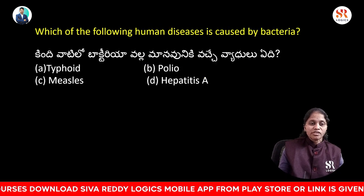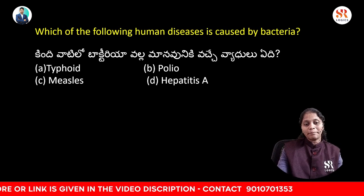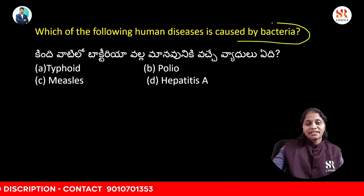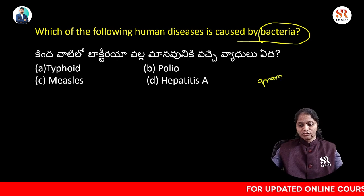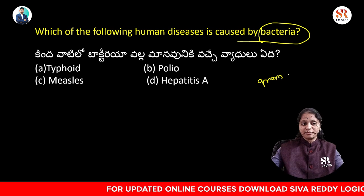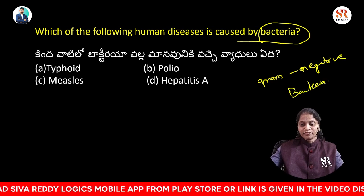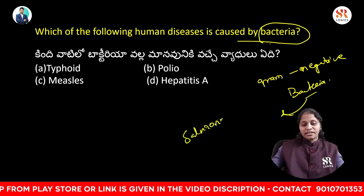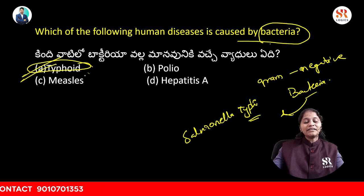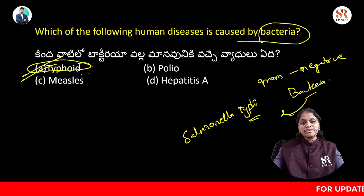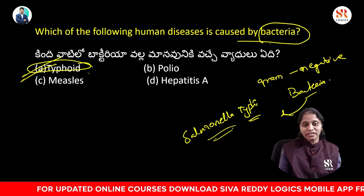Next: which of the following human diseases is caused by bacteria — typhoid, polio, measles, or hepatitis A? The answer is typhoid. Typhoid is a human disease caused by the bacteria called Salmonella typhi, which is a gram-negative bacteria. That was the main reason which caused the human disease called typhoid.